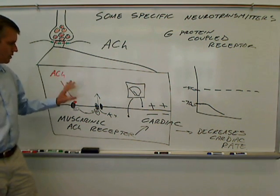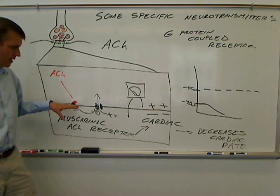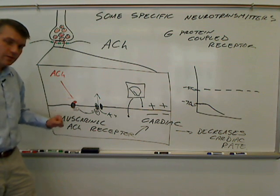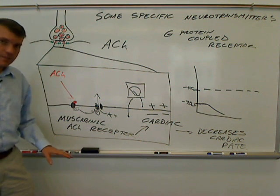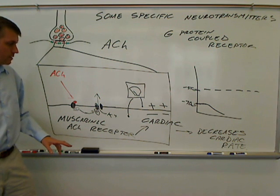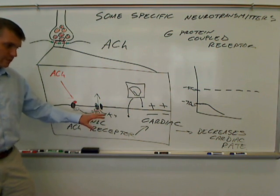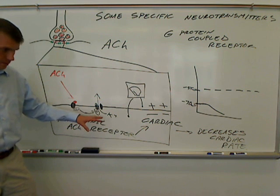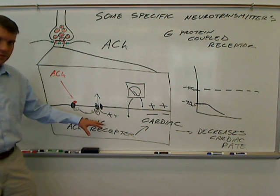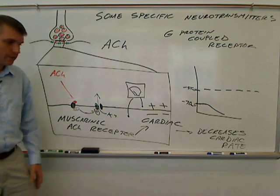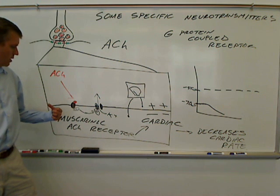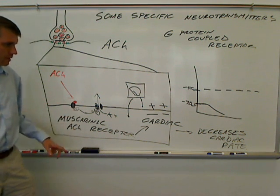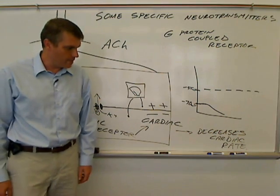That's some molecular biology behind how acetylcholine works for a nicotinic receptor and for a muscarinic receptor. And this is at least one specific example of why it's important to know for what you may ultimately end up doing, because these muscarinic receptors in the heart lead to a decrease in cardiac rate.